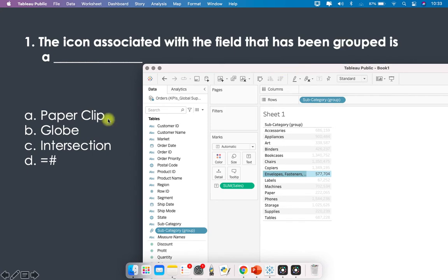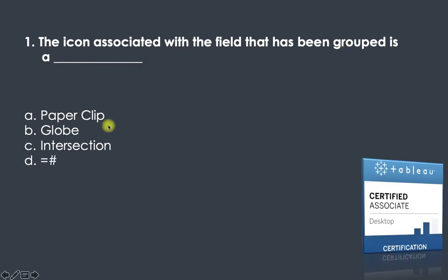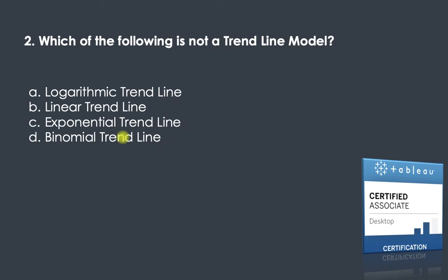Question two: which of the following is not a trend line model? The options are logarithmic, linear, exponential, and binomial. Let me take you to Tableau Help to look this up.